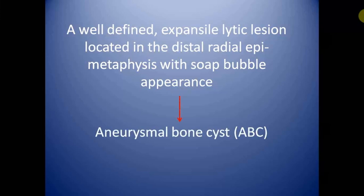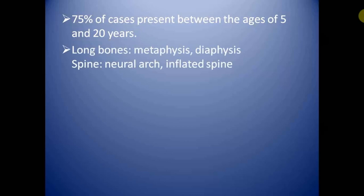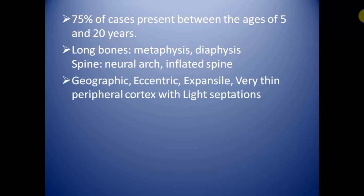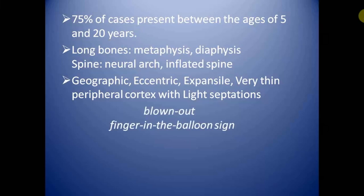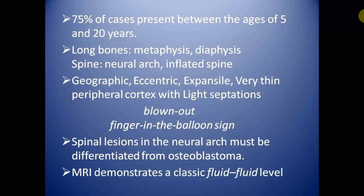This is a well-defined expansile lytic lesion located in the distal radial epiphysis and metaphysis with soap bubble appearance — this is a case of aneurysmal bone cyst. The differential includes giant cell tumor, but GCTs are generally seen in middle age with closed epiphyses. ABCs involve 75% of cases between 5 and 20 years of age. In long bones, ABCs involve metaphysis and diaphysis; in the spine, the neural arch giving an inflated appearance. Lesions are eccentric, expansile with thin peripheral cortex and lytic internal septations — the blown-out or balloon sign. Spinal lesions must be differentiated from osteoblastoma, which has osseous matrix. MRI demonstrates a classic fluid-fluid level.